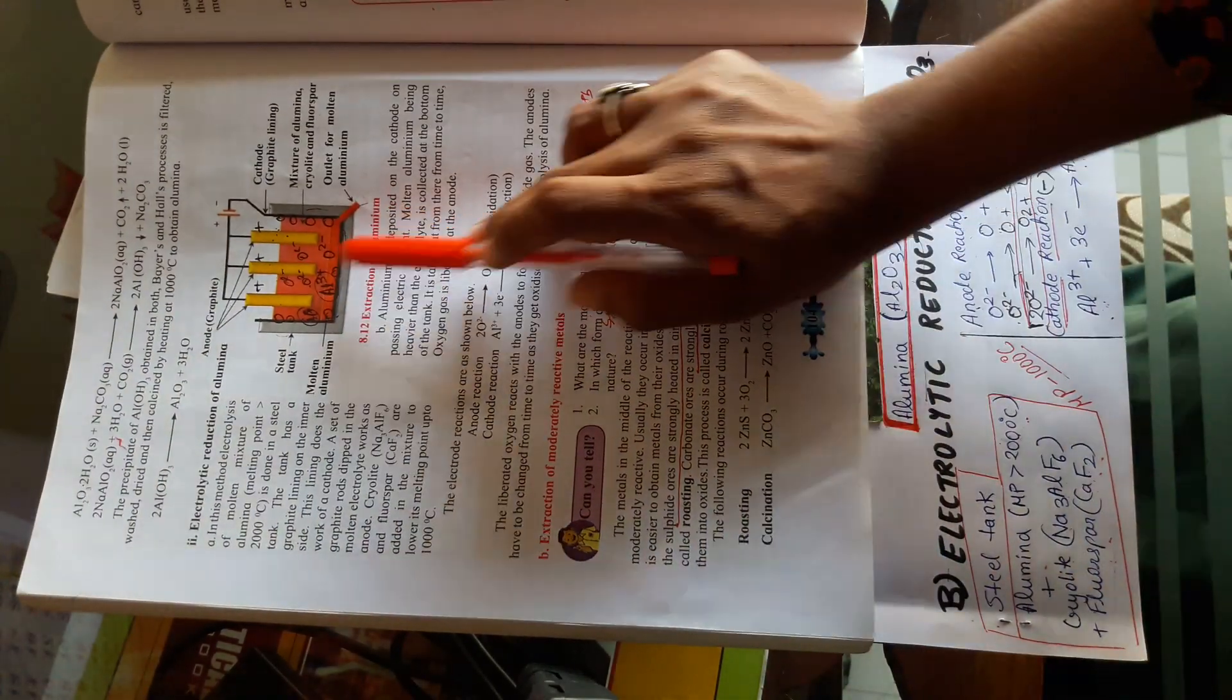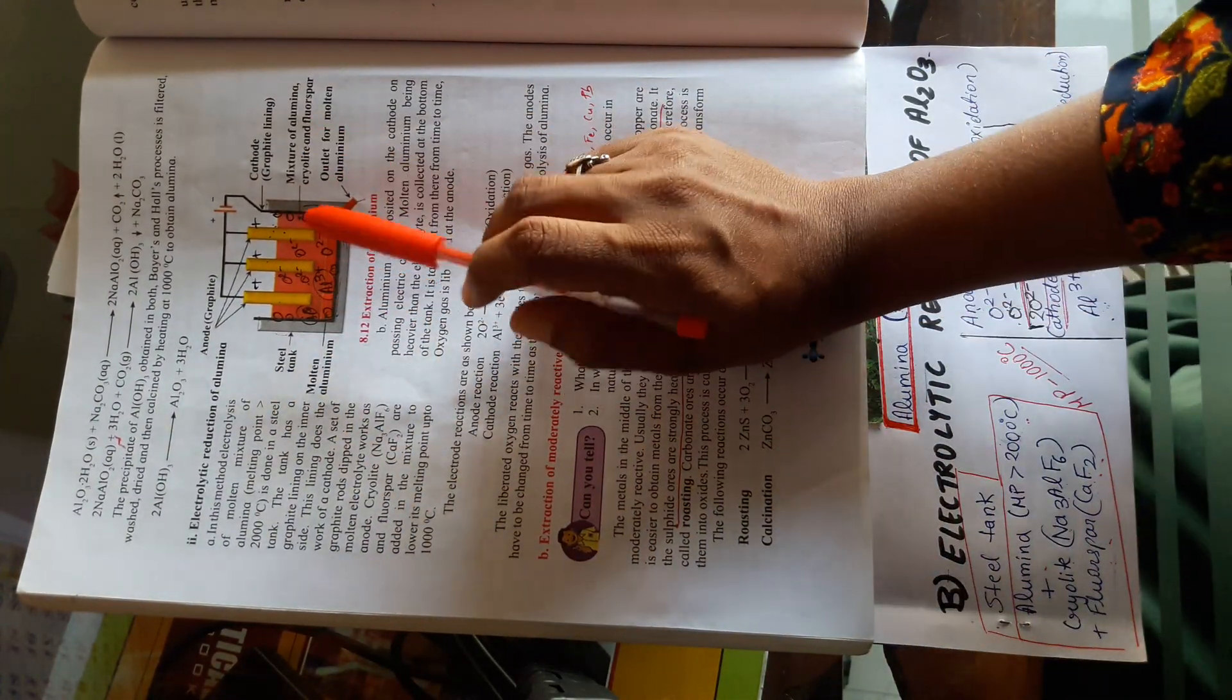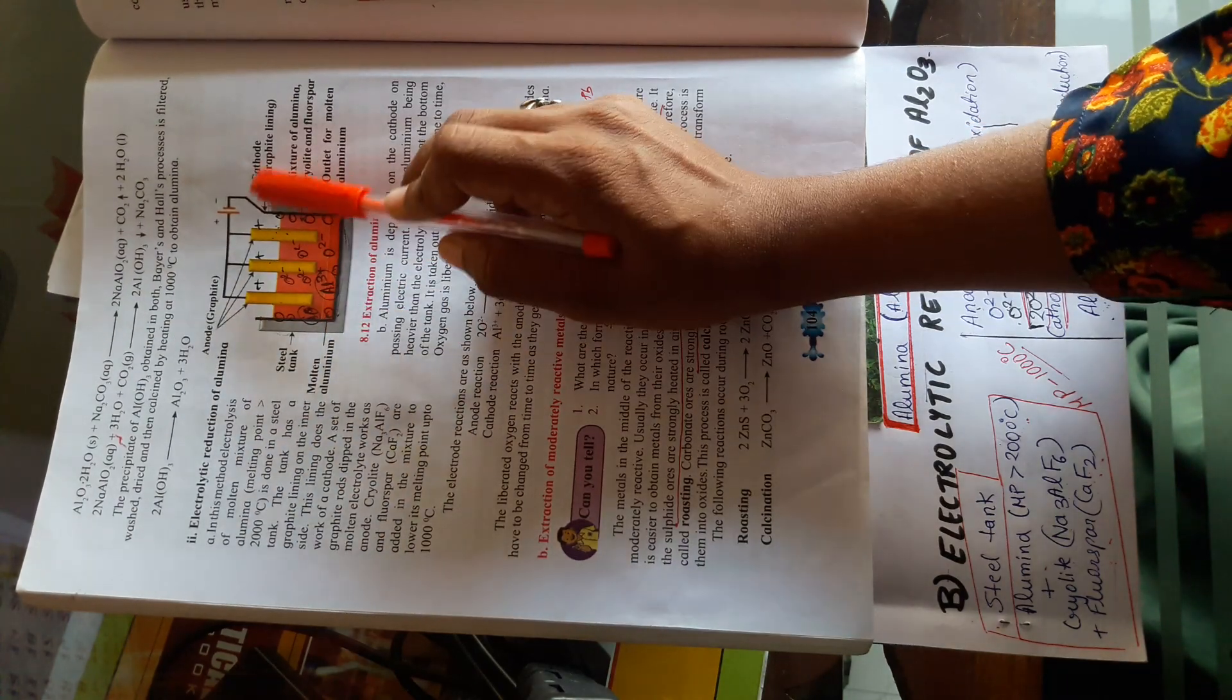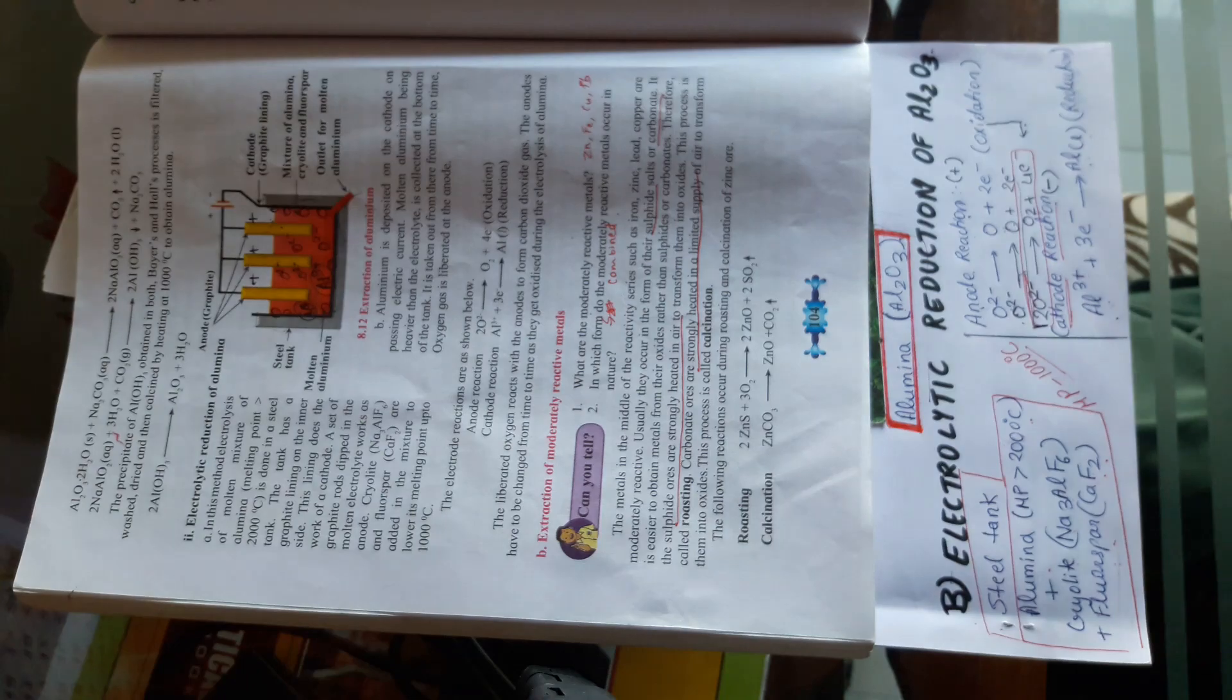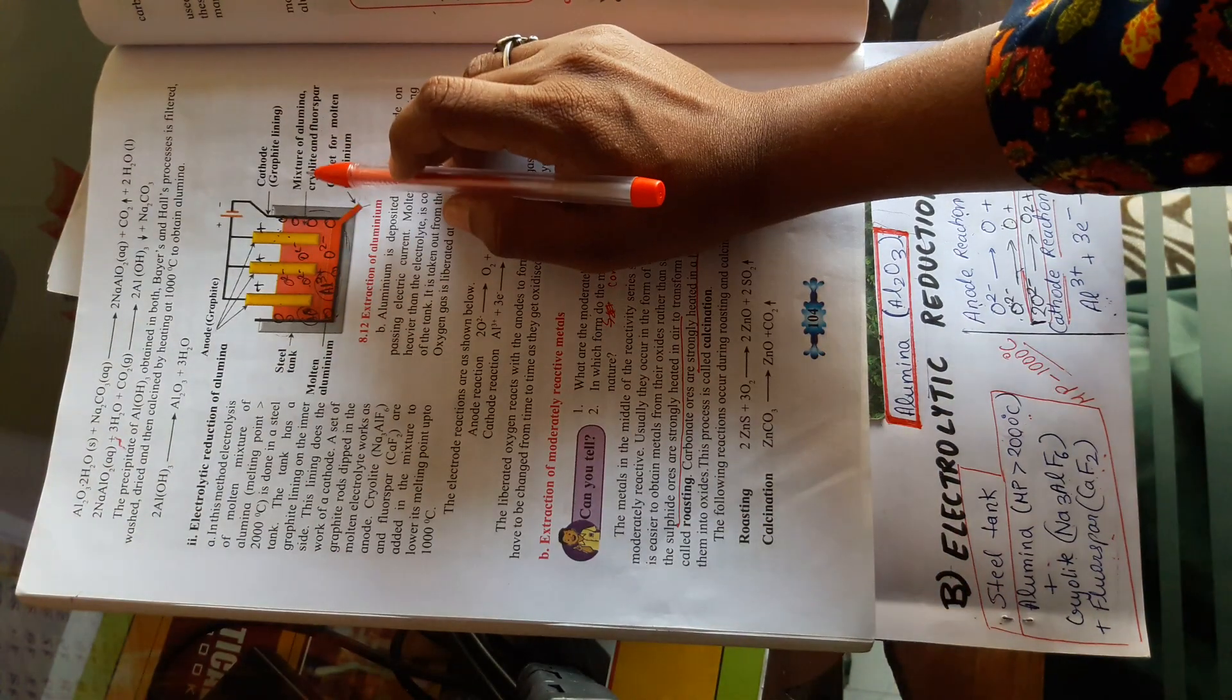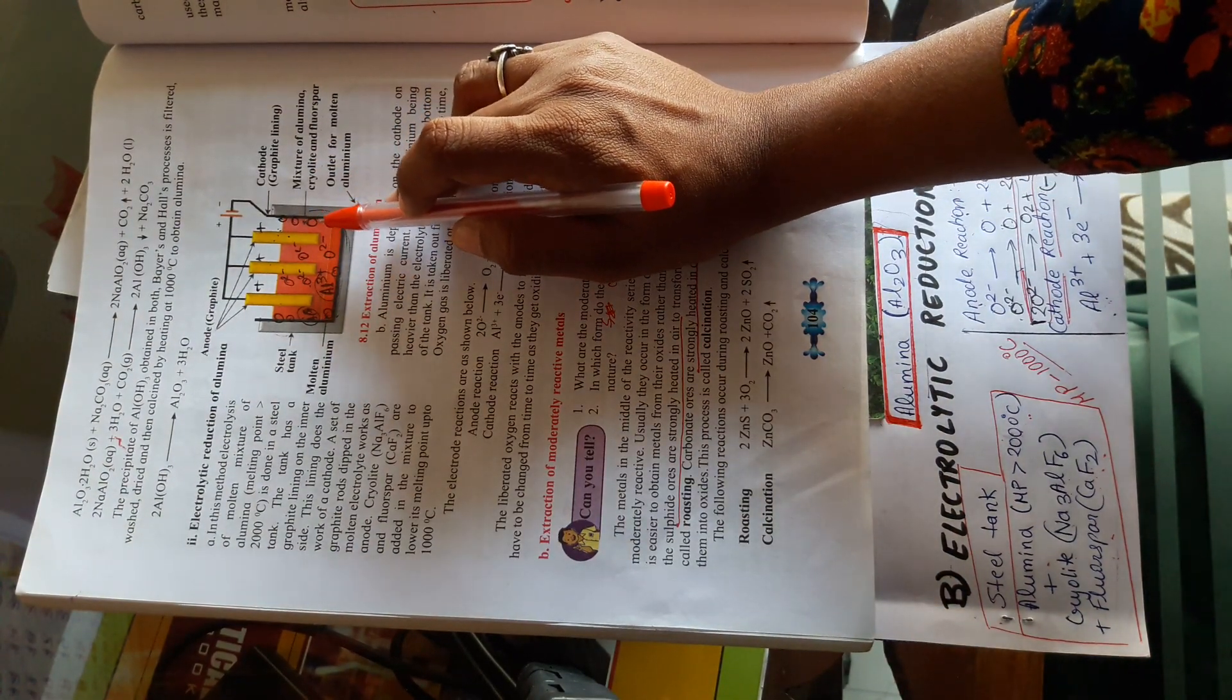For this, we need an electrolytic cell. The electrolytic cell or electrolytic container is a steel tank. In this steel tank, alumina, molten alumina has to be taken.